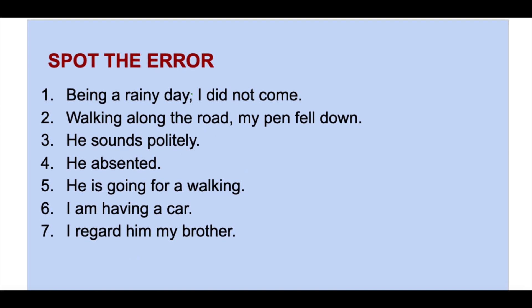Let's solve these questions. 'Being a rainy day, I did not come' — here subject is not present; reading the sentence we understand 'I' is the rainy day, which is not true. So we introduce a pseudo subject: 'It being a rainy day, I did not come.' 'Walking along the road, my pen fell down' — my pen was not walking; I was walking. So: 'While I was walking along the road, my pen fell down.'